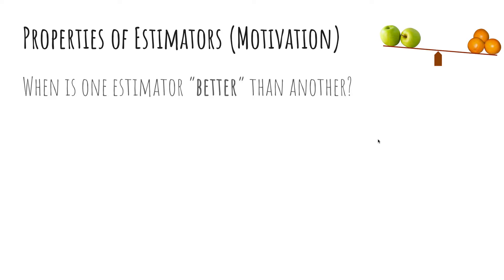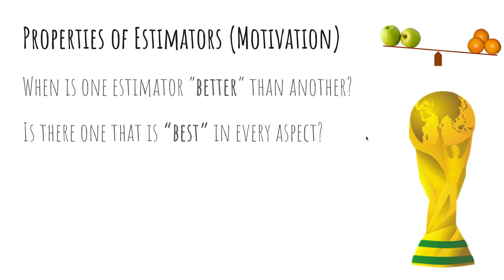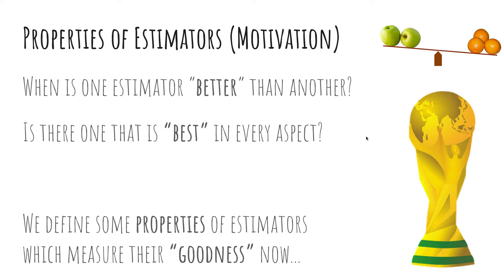We've talked about this entire chapter about how to estimate parameters, right? We had MLE, MOM, and MAP - maximum likelihood, method of moments, and maximum a posteriori. And so now we would like to see, sometimes they give us different estimates, right? And so we want to know when is one estimator better than another, and is there one that is best in every aspect.